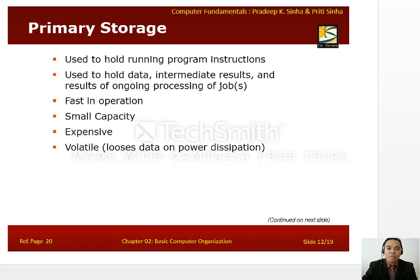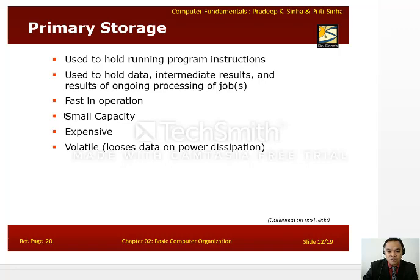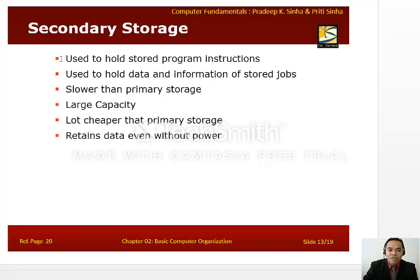Primary storage is used to hold running program instructions and intermediate results of ongoing processing. It is fast in operation but has small capacity, is expensive, and is volatile — meaning data will be lost if the power supply is interrupted. Secondary storage is used to hold stored programs, instructions, data, and information of stored jobs. It is slower than primary storage but has large capacity, is cheaper than primary storage, and data is retained even without power supply.